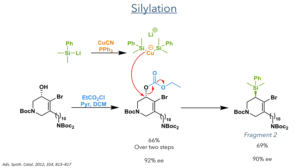This carbonate served as the leaving group for the installation of a dimethylphenylsilyl group. Dimethylphenylsilyl lithium first reacts with copper cyanide in the presence of triphenylphosphine. The resulting silyl nucleophile attacks the carbonate in an SN2 mechanism, resulting in an inversion of stereochemistry. This completed the formation of fragment 2 in a 69% yield with a 90% ee.